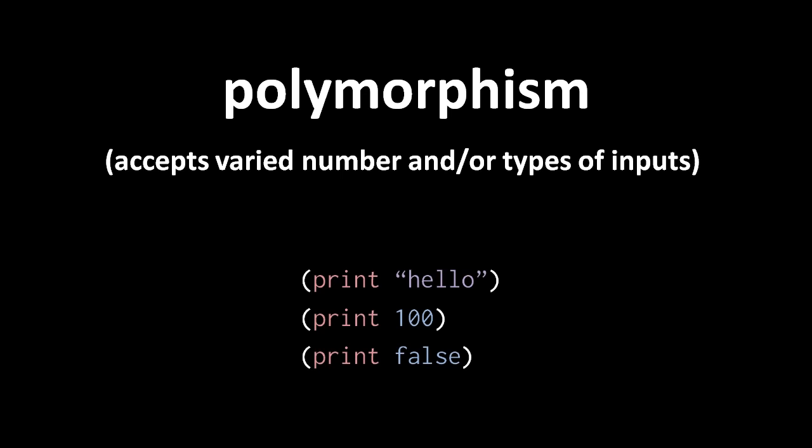In the case of print, the operator does basically the same thing no matter the type of input. But in principle, a polymorphic operation or function can do totally different things depending upon the number and or types of inputs.